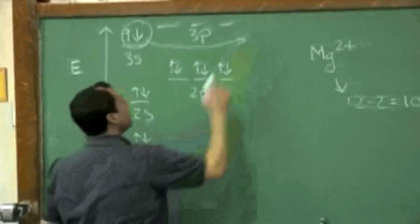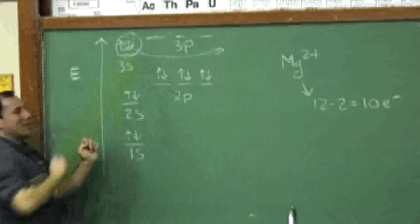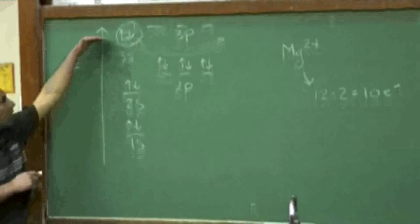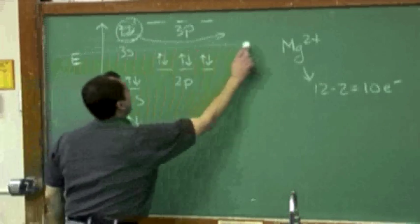Magnesium is going to lose these electrons up here. I'll put an X through there going, hey, these aren't there anymore. It's magnesium 2+. It's easy to see the chemistry here because these electrons are beyond the filled valence shell right there.